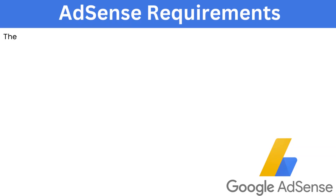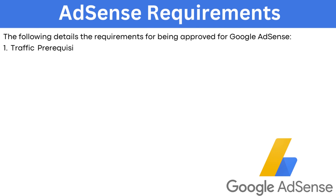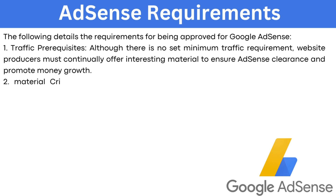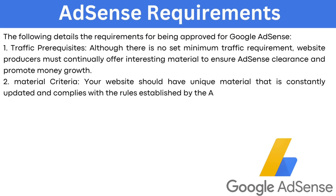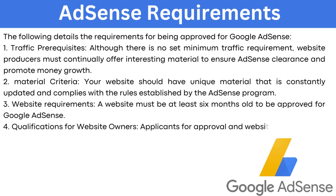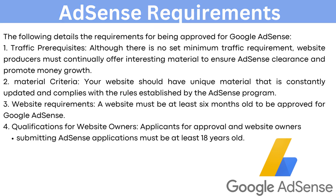AdSense requirements: although there is no set minimum traffic requirement, website producers must continually offer interesting material to ensure AdSense clearance and promote money growth. Your website should have unique material that is constantly updated and complies with AdSense program rules. A website must be at least 6 months old to be approved for Google AdSense. Applicants and website owners submitting AdSense applications must be at least 18 years old.